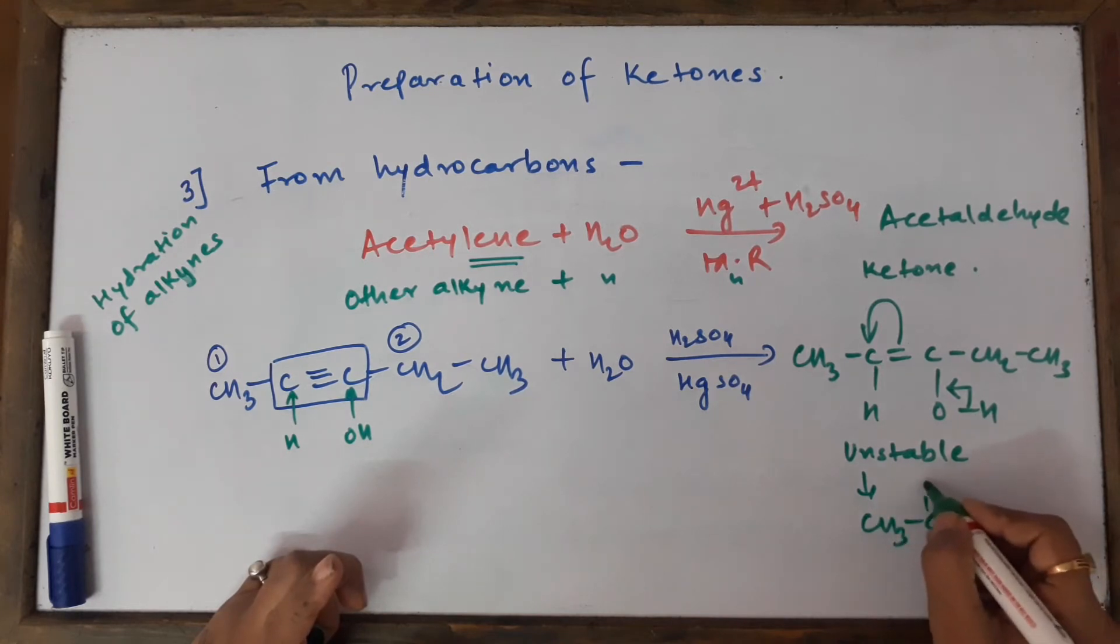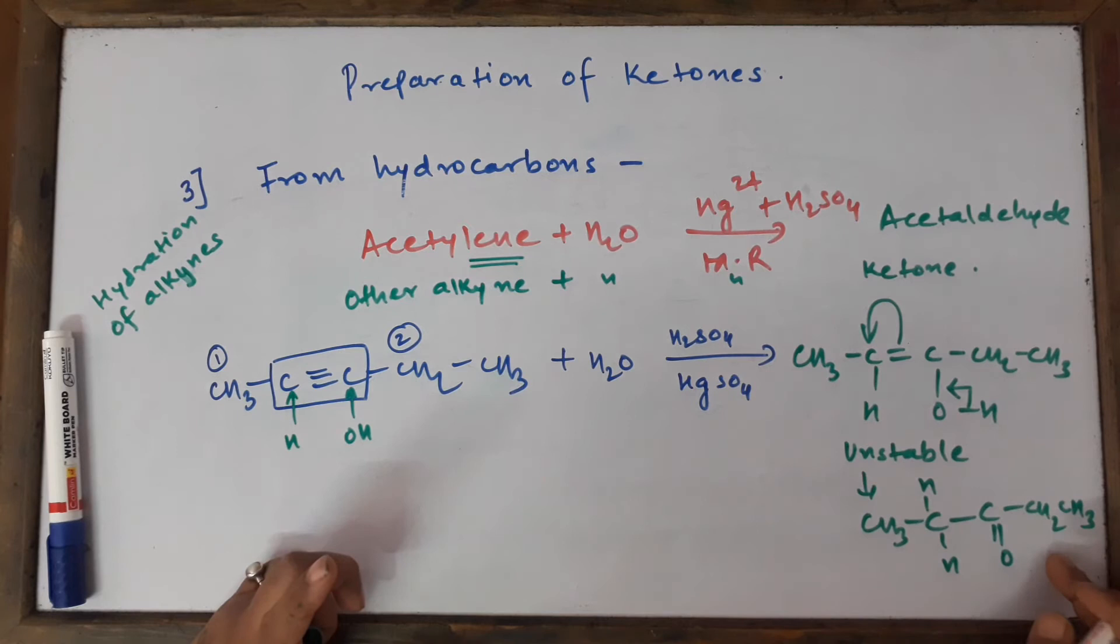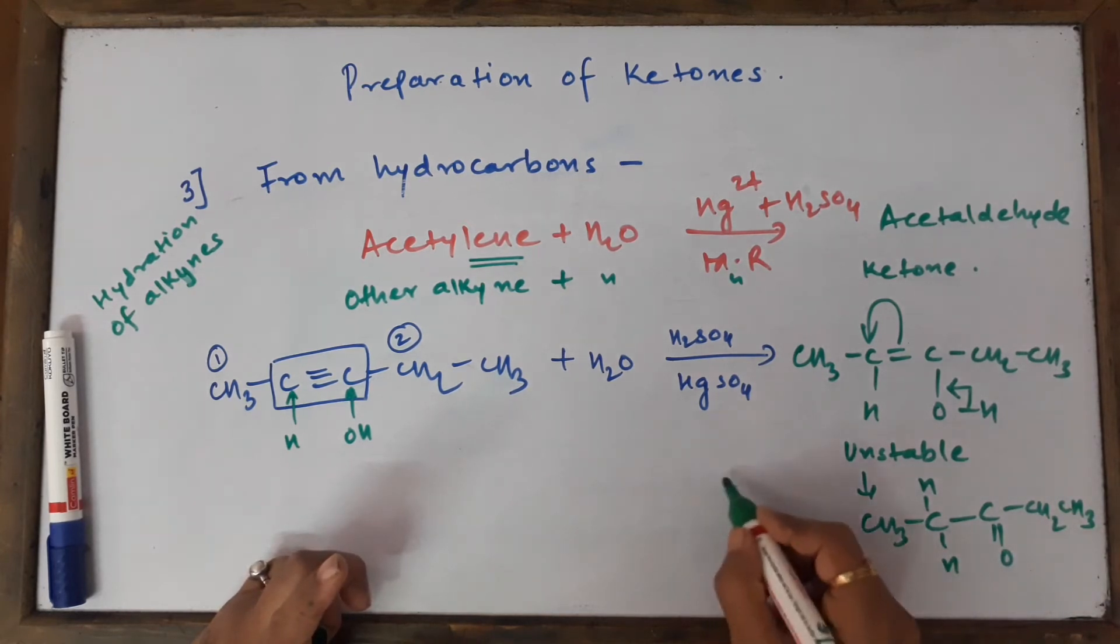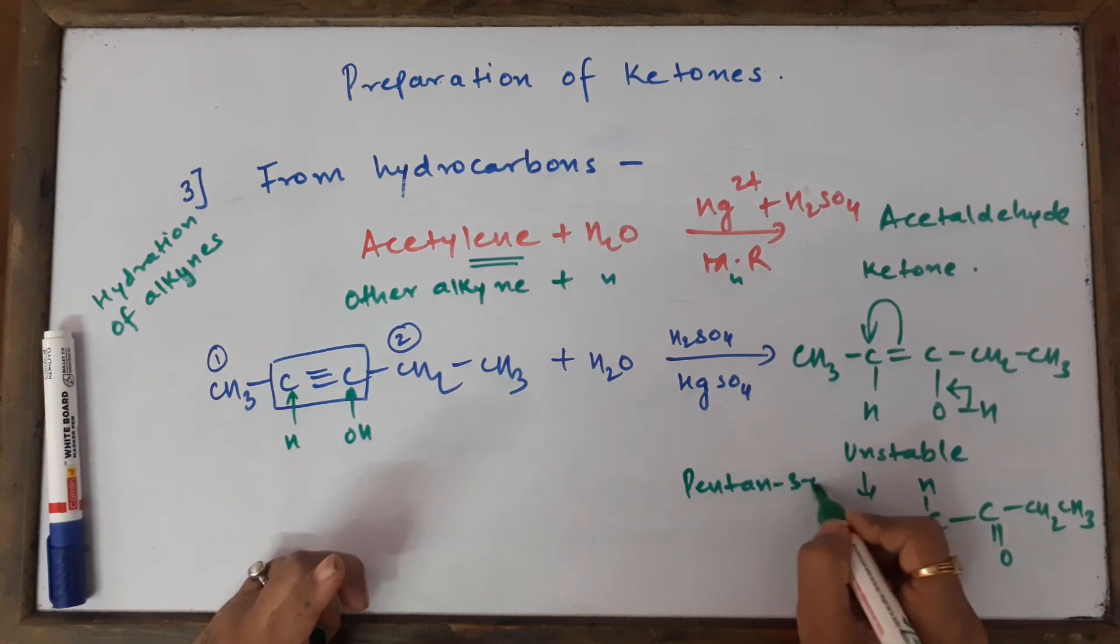So the final product here we are going to get is CH3-C-CH-CH2-CH3. You can see here that there's a double bond being formed over here - 1, 2, 3, 4, 5 - so we get pentane-3-one as one of the products.